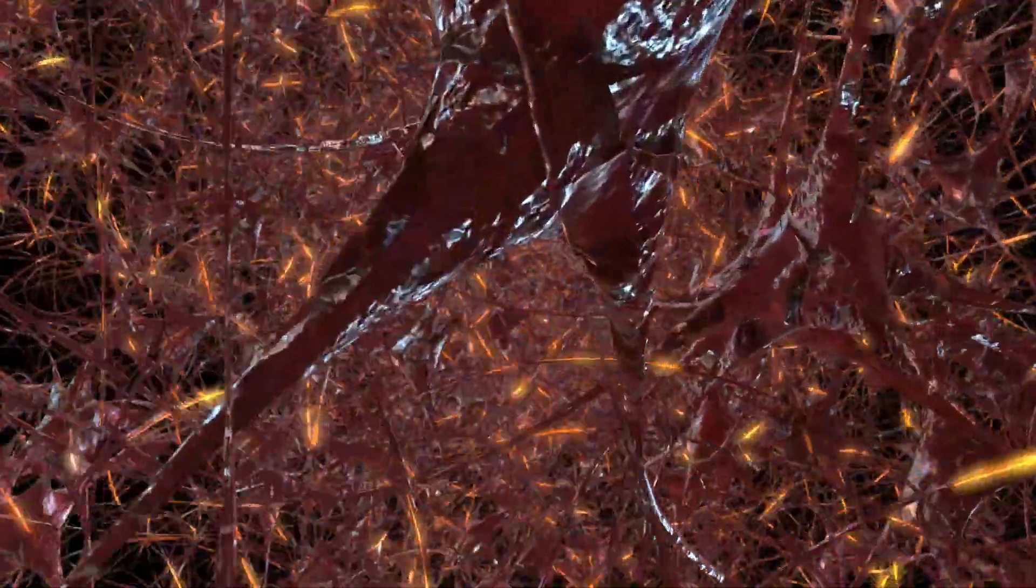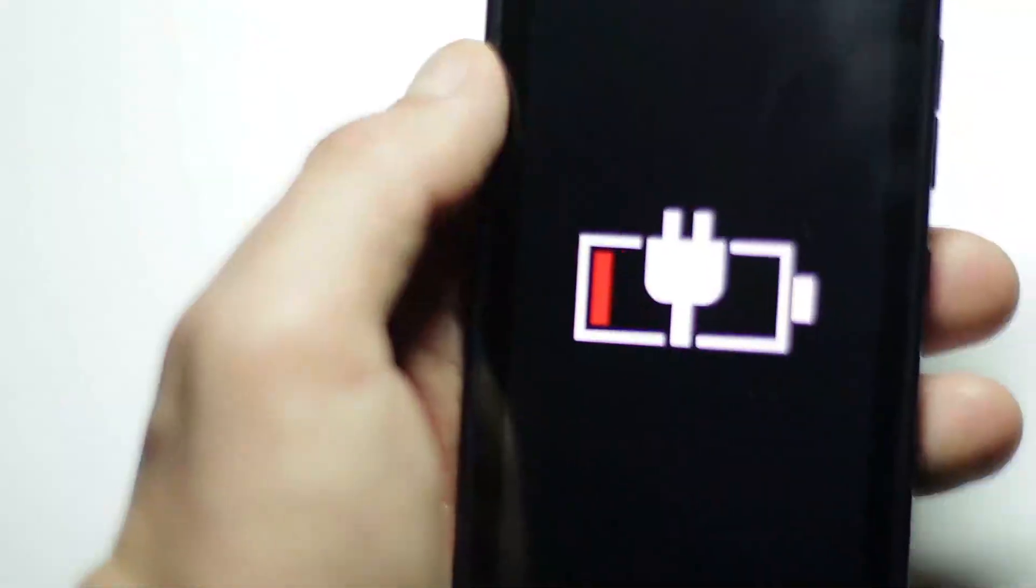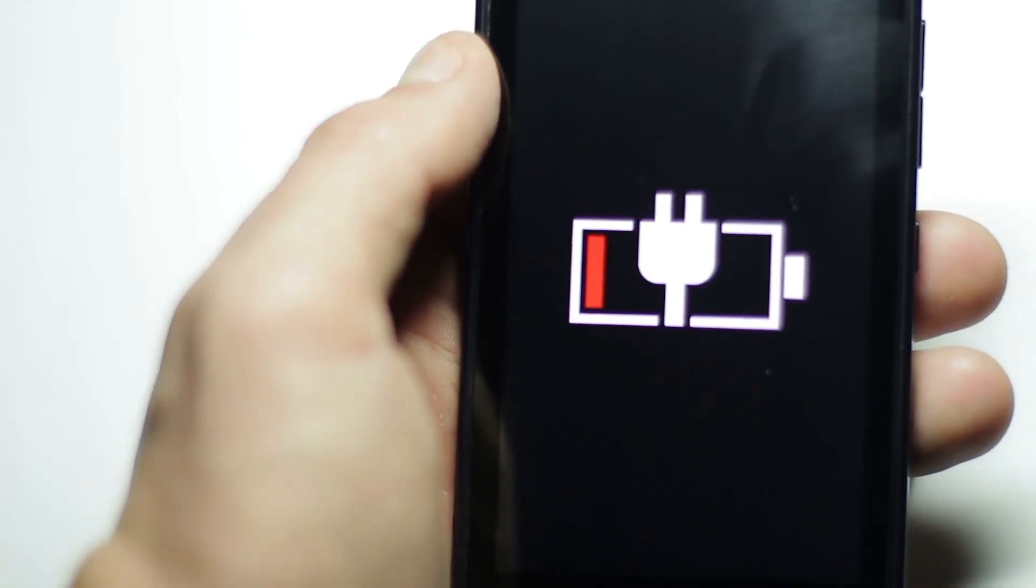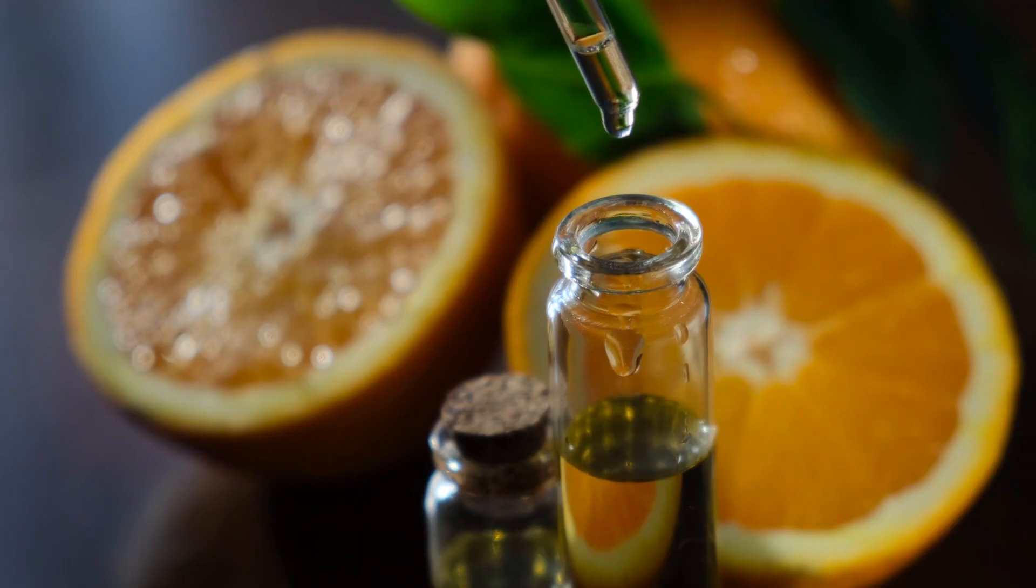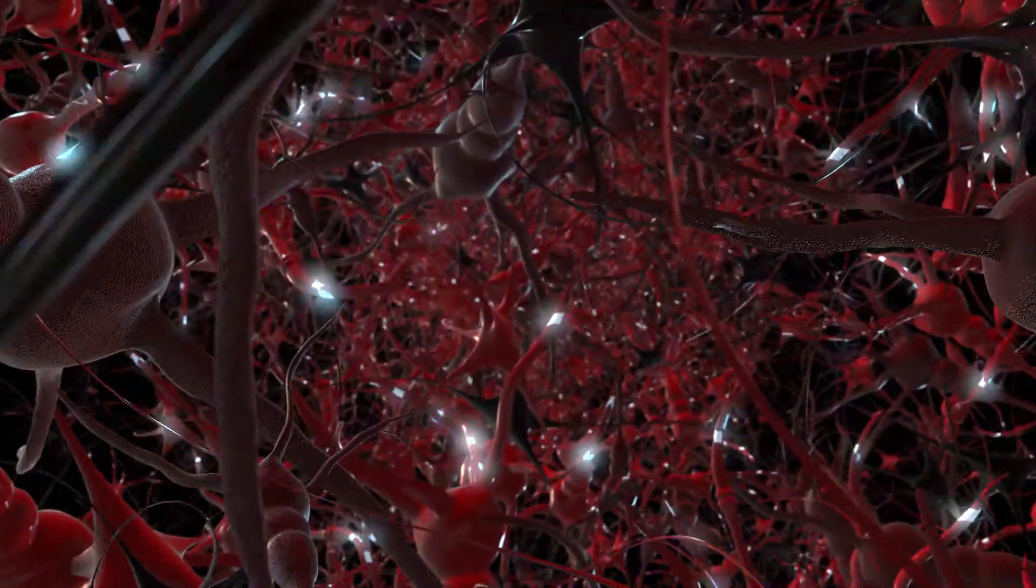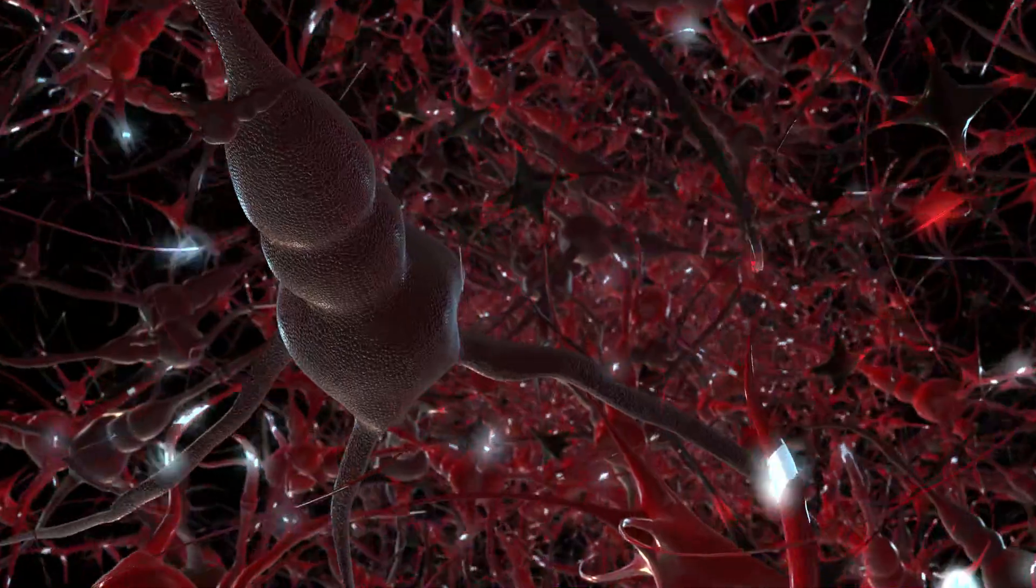Without sturdy blood vessels, your nerves miss out on oxygen and nutrients. That's like trying to charge your phone with a frayed cable—things just don't work right. Vitamin C also aids in the production of neurotransmitters and acts as a mighty antioxidant, fighting off oxidative stress that could otherwise damage your nerves.